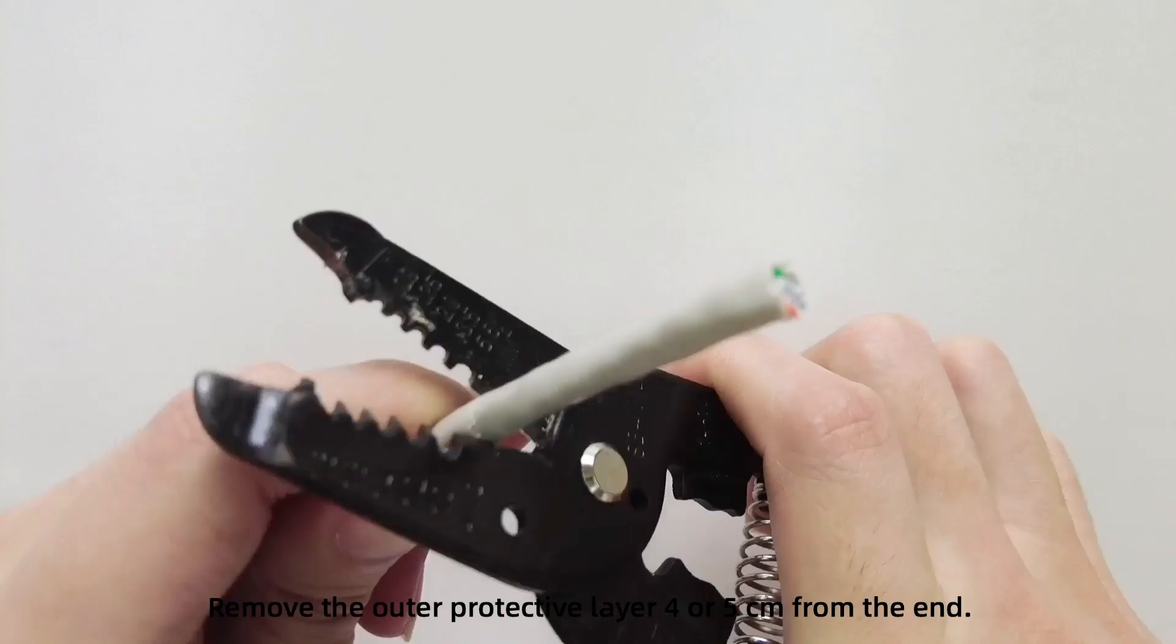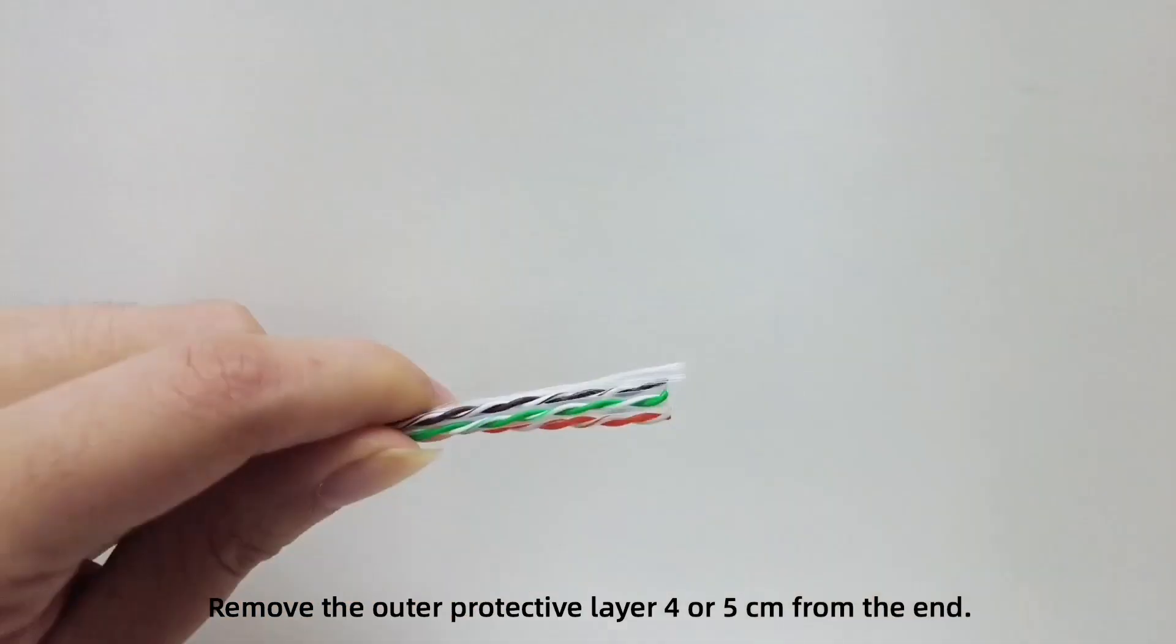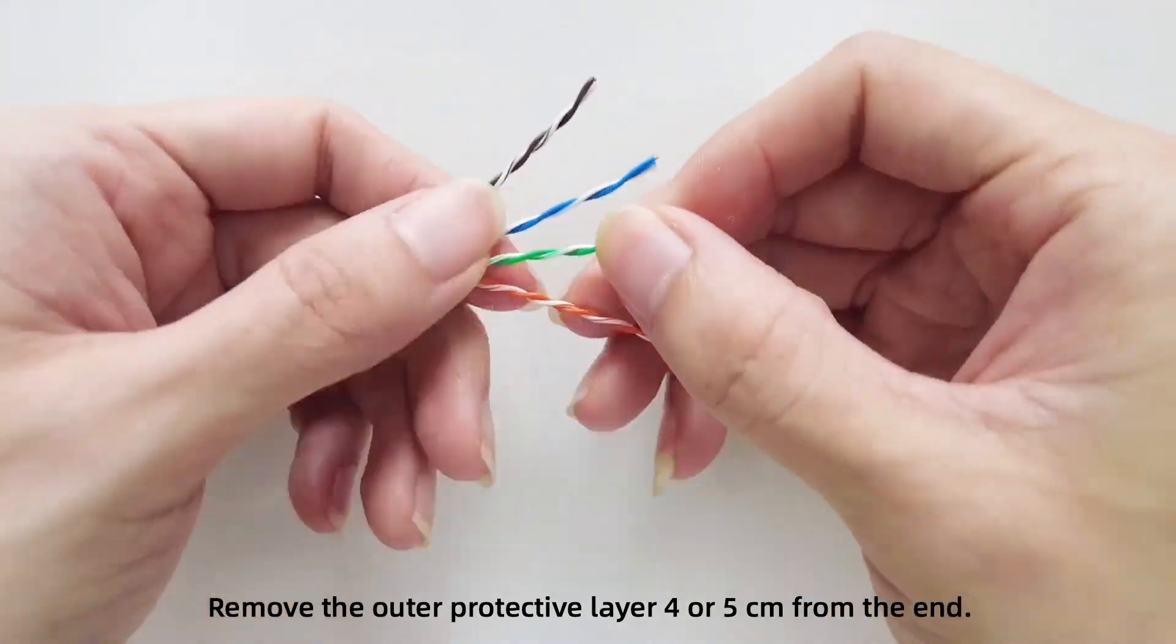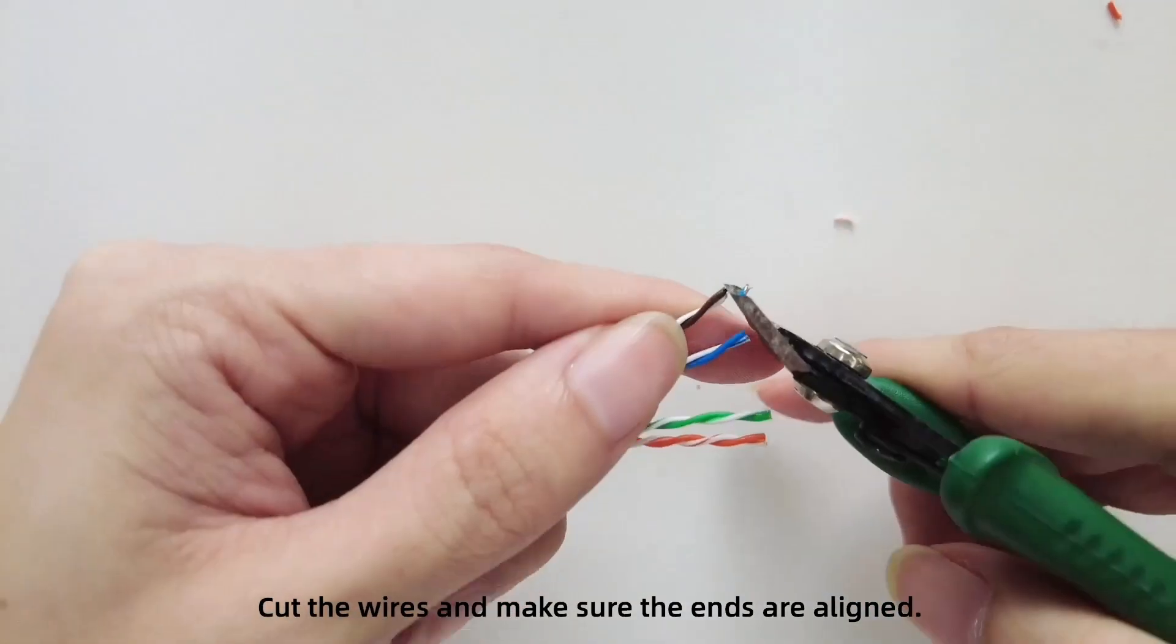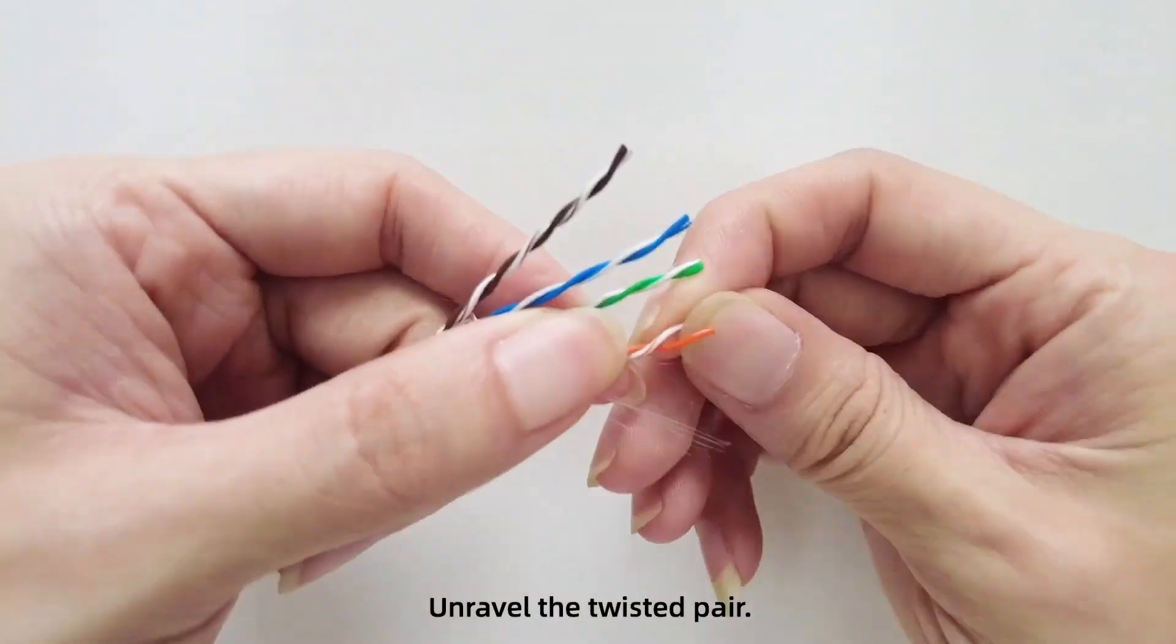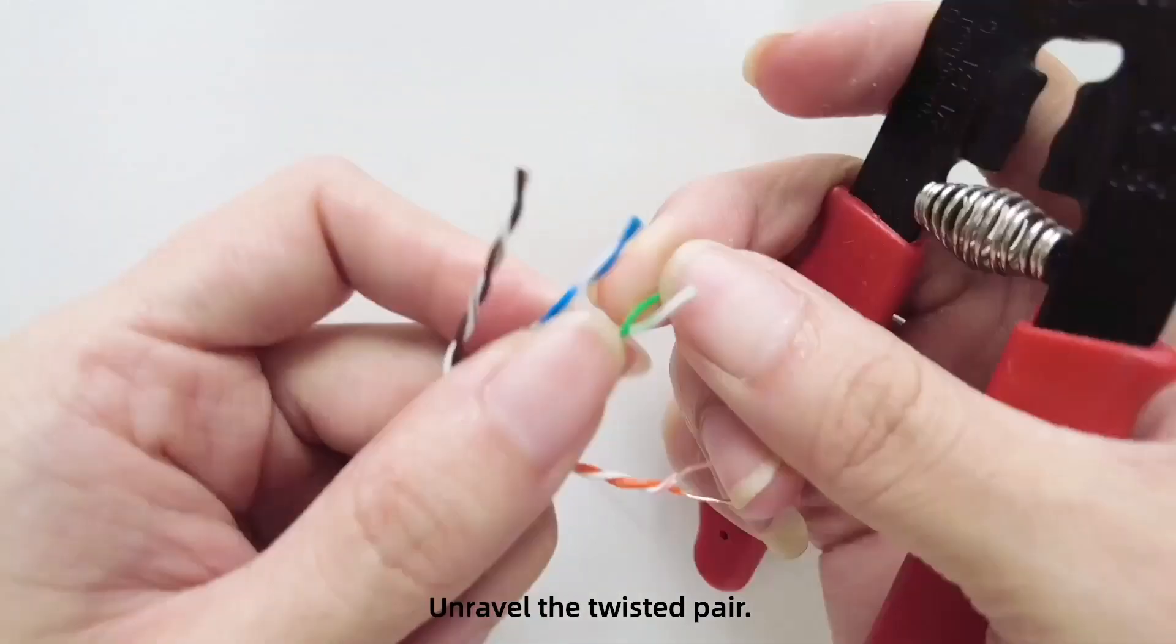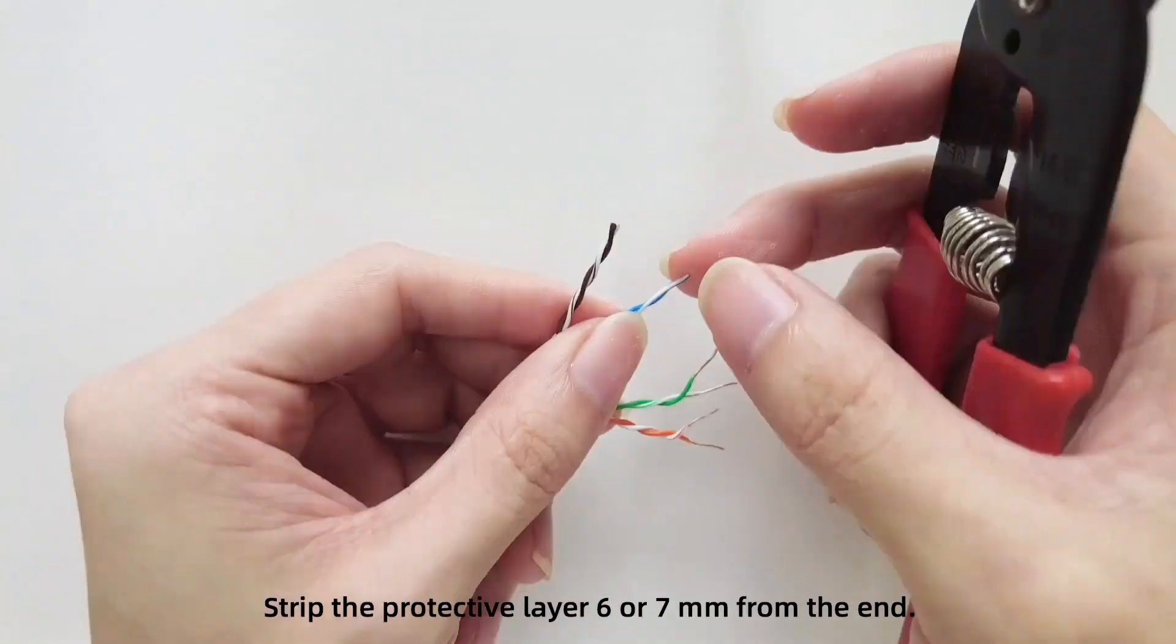Remove the outer protective layer 4 or 5 cm from the end. Cut the wires and make sure the ends are aligned. Unravel the twisted pair. Strip the protective layer 6 or 7 mm from the end.